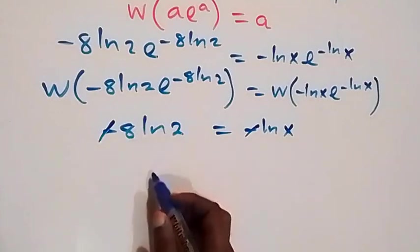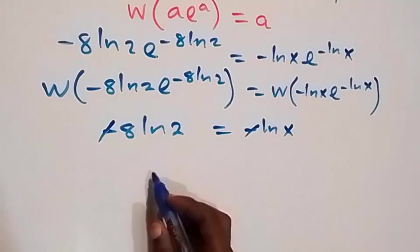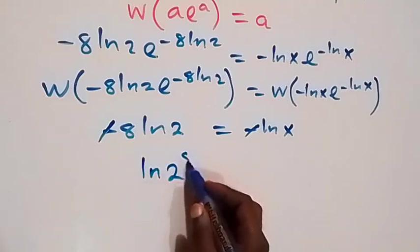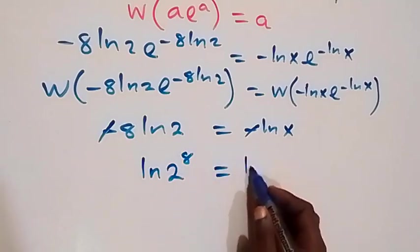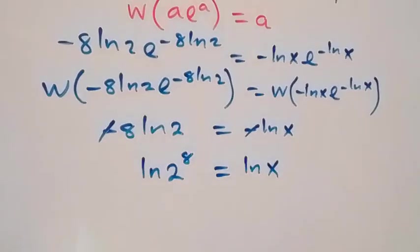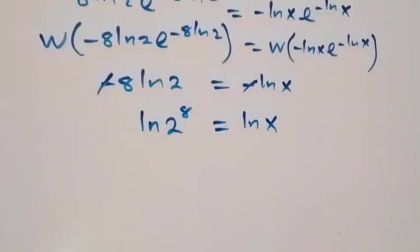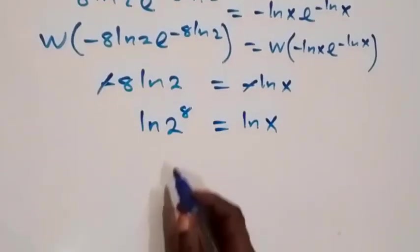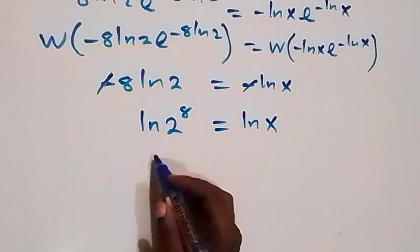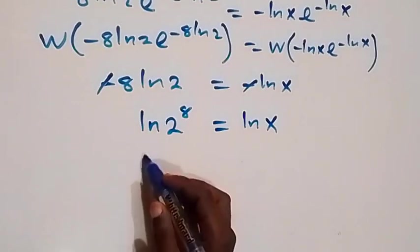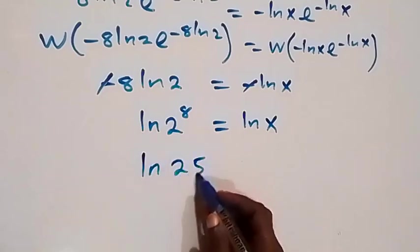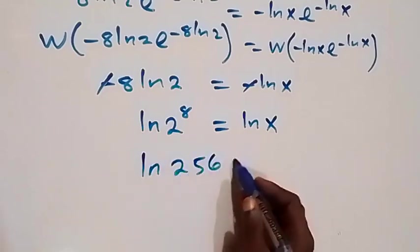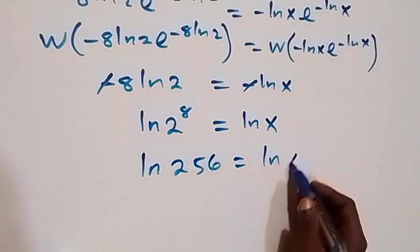Then we reverse the law of logarithm: the minuses cancel, and this becomes ln 2 raised to power 8 equals to ln x. And here, 2 raised to power 8 is 256. So we have ln 256 equals to ln x.